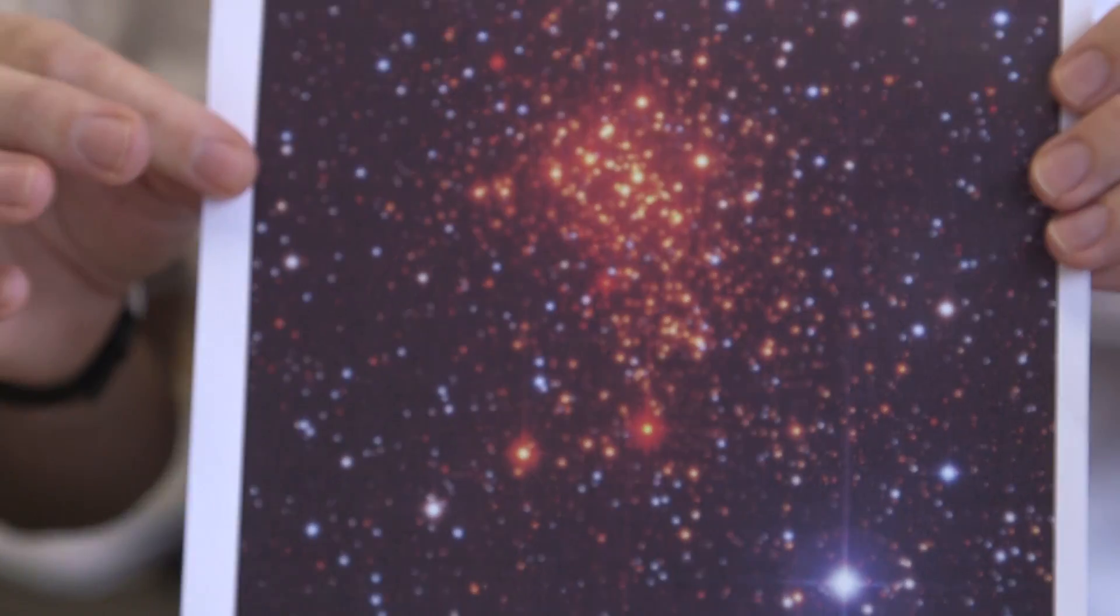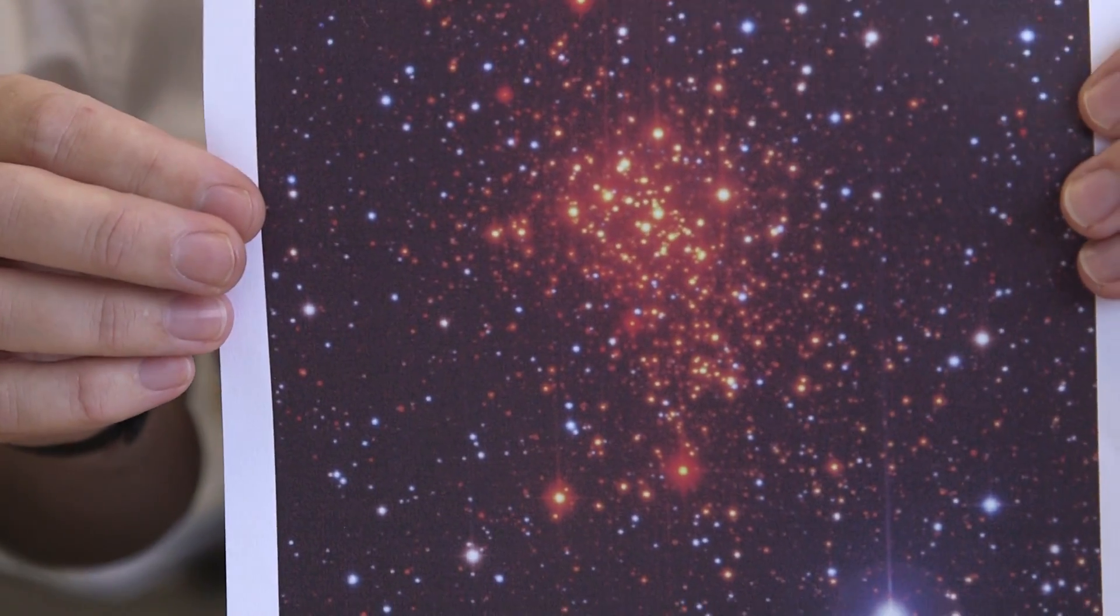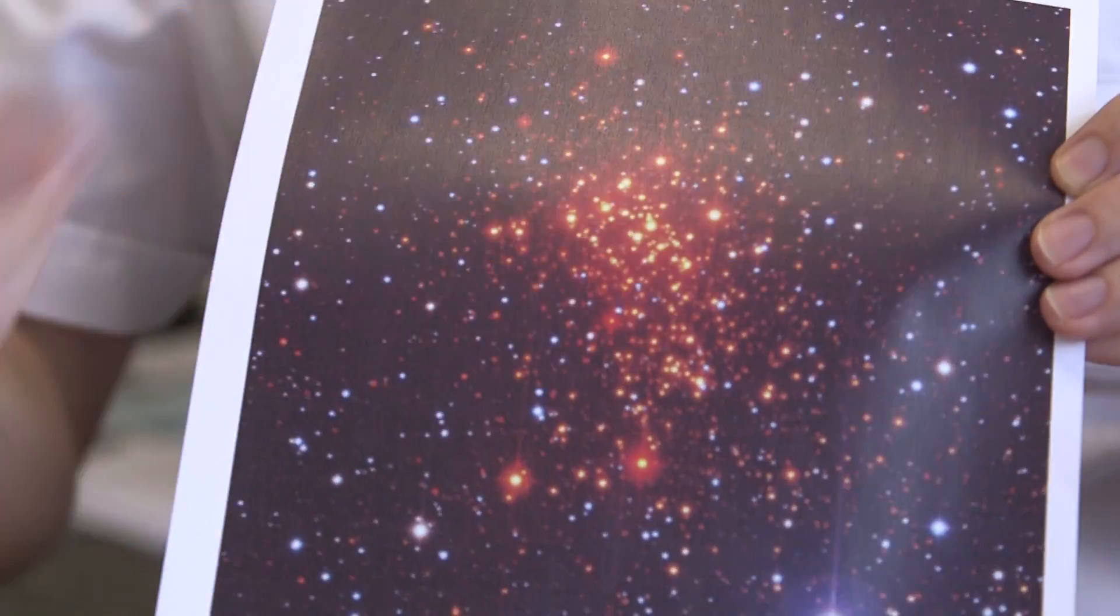And so when we tend to show pretty pictures of clusters, we do a composite image. So taking, combining those three images produces this. And so this is a combined image of Westerland 1. All the stars in the cluster are these kind of reddish-orangey things.